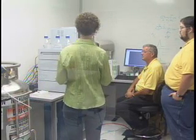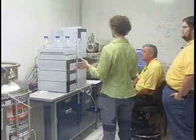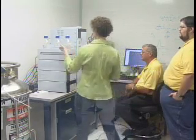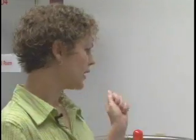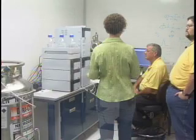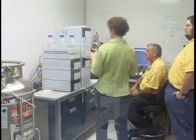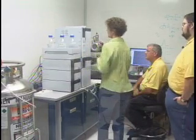This is the LC portion of the system, which includes an aqueous mobile phase consisting of ammonium formate and formic acid. The formic acid is important in the mobile phase because you want an acidic environment in order to enhance ion formation of your compounds. We've also got a second mobile phase, which is the organic mobile phase.